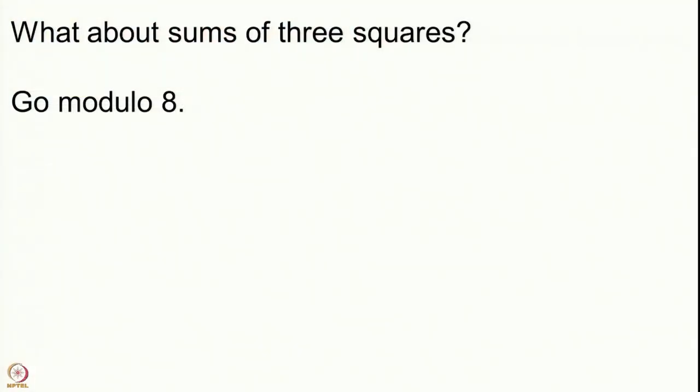Any number which is 3 mod 4 has to have a prime factor congruent to 3 mod 4 with an odd power, and therefore such a number will not be a sum of 2 squares. But what about 3 squares? Something congruent to 3 mod 4 can be a sum of 3 squares — for example, 1² + 1² + 1² gives a sum ≡ 3 mod 4. So going modulo 4 is not enough; we go modulo 8.